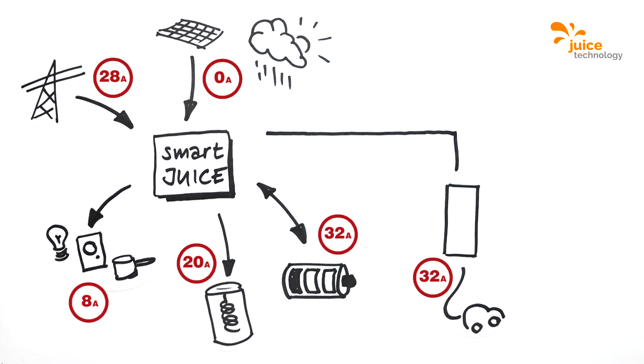In our case, the electric vehicle charges at 32 amperes, so the public power grid is used for that automatically. Even with additional charging stations, Smart Juice manages the situation accordingly and optimally.